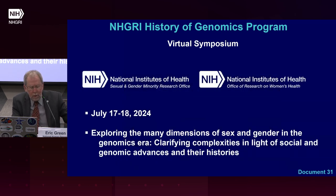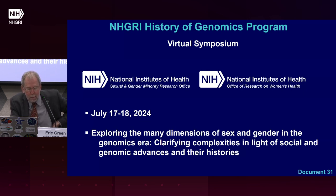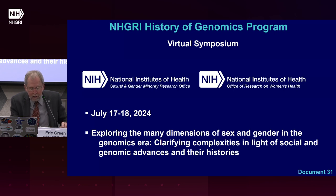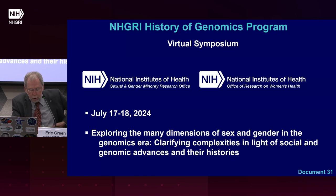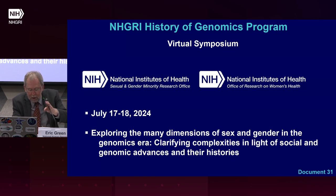Later this summer, on July 17th and 18th, the NHGRI History of Genomics program, the NIH Sexual and Gender Minority Office, and the NIH Office of Research on Women's Health will host a two-day virtual symposium entitled Exploring the Many Dimensions of Sex and Gender in the Genomics Era. This event aims to clarify the complexity of sex and gender in light of social and genomic advances and their histories, bringing together experts from the biological and social sciences to contextualize — though not resolve — the complexities about sex, gender, and genomics in their scientific, ethical, and historical context. These interdisciplinary conversations will aid scientists, policymakers, and the public in understanding the many dimensions of sex and sex categories and their relationship with gender.